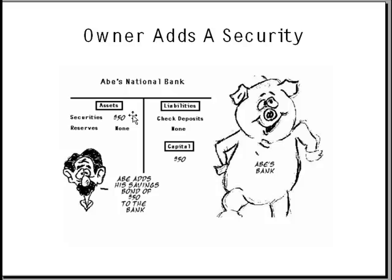Suppose that Abe has fifty dollars in Treasury bills that he wants to contribute to his business. Since these are things that he owns, they would be listed as a security or an asset. Notice now that his capital, or worth in the business, has increased by fifty dollars.